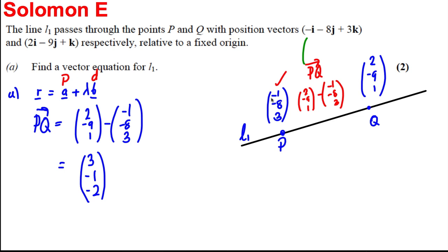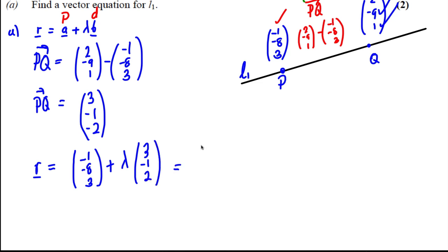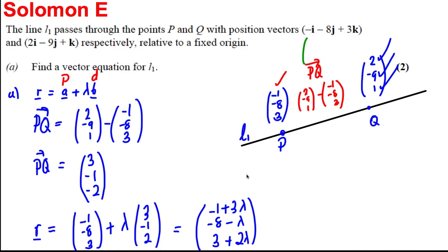Let's check it works. If I add the direction (3, negative 1, negative 2) to point P (negative 1, negative 8, 3): 3 plus negative 1 gives 2, negative 1 plus negative 8 gives negative 9, and negative 2 plus 3 gives 1. That is indeed Q, confirming the direction. Therefore, the equation of line L1 is: R equals (negative 1, negative 8, 3) plus lambda times (3, negative 1, negative 2), which we can also write as (negative 1 plus 3 lambda, negative 8 minus lambda, 3 minus 2 lambda).